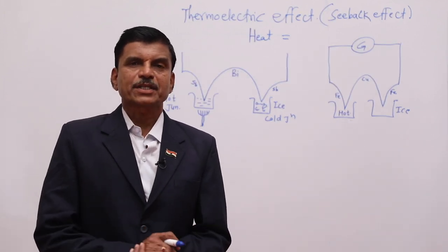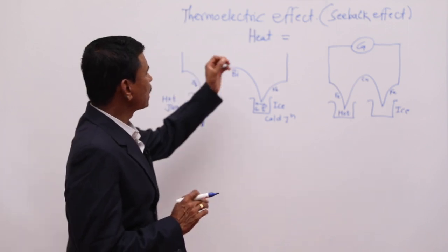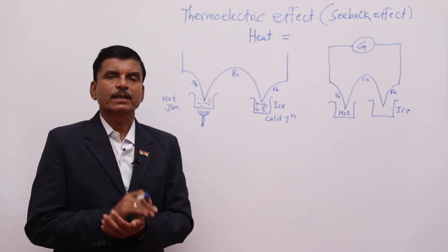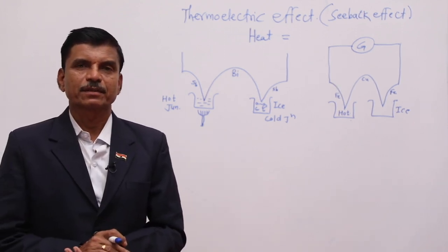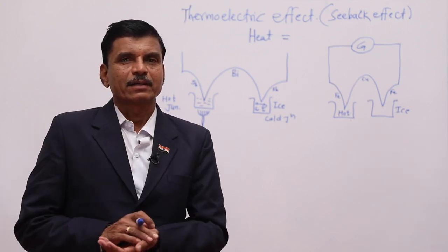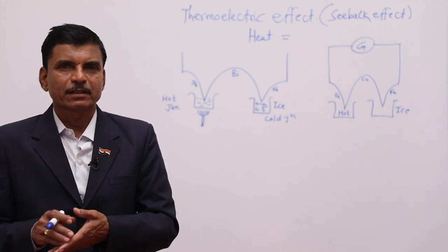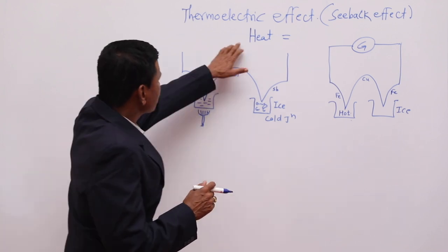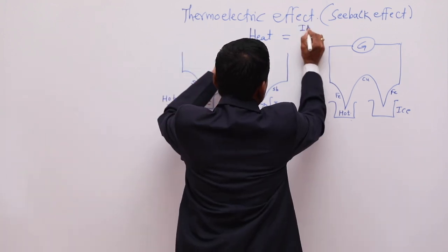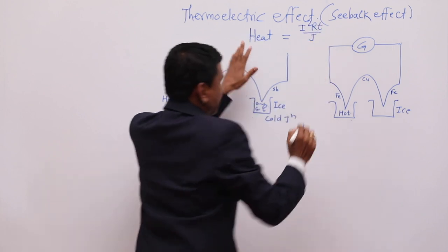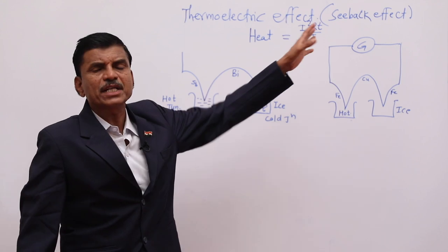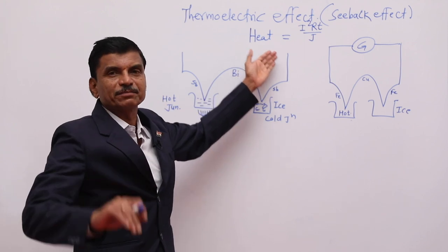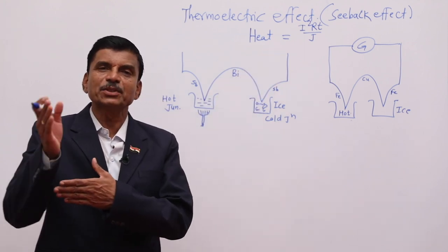We will discuss the last article from this topic, that is the thermoelectric effect, also called the Seebeck effect. We have studied that when electric current flows through a resistance, electric energy supplied by the battery is converted into heat. Scientist Joule gave this equation: the heat created in the resistance is given by I²RT/J calories, or written as VIT/J. So electric energy is converted into heat.